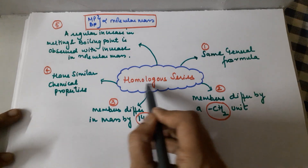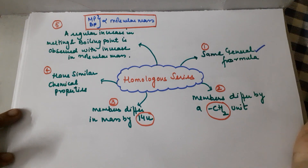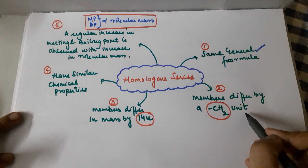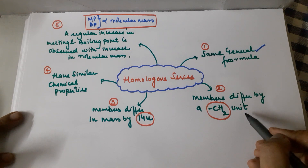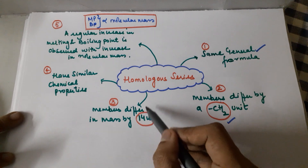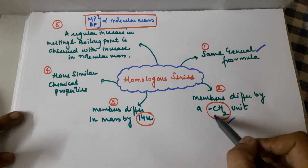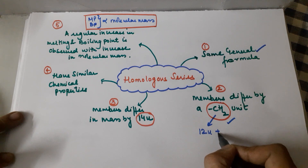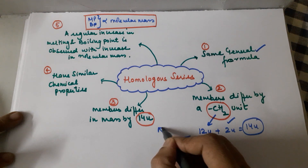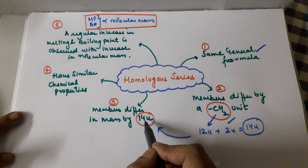Let's summarize the key points of homologous series. First, members are derived from the same general formula. Second, successive members differ by a CH₂ unit — as you go from one member to the next, there is a difference of one CH₂ unit. Third, since they differ by CH₂, the mass difference is 12u (one carbon) plus 2u (two hydrogens) = 14u. So members differ in mass by 14u.